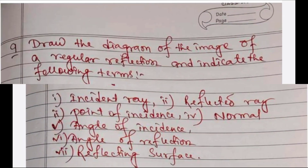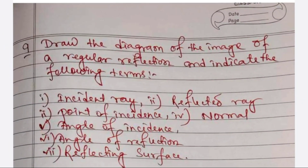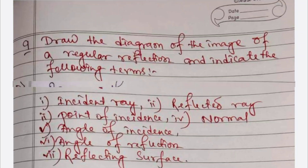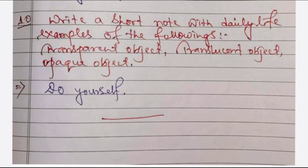Draw a diagram of regular reflection and indicate the following terms: incident ray, reflected ray, point of incidence, normal, angle of incidence, angle of reflection, and reflecting surface. You have to do this by yourself at home — it was already shown in the previous video. The last question asks you to write a short note with daily life examples on transparent, translucent, and opaque objects. This is a very easy task and has already been discussed earlier. Today up to here, students. Thank you. Visit again, and all the best for your coming periodic test 2 or post-mid exam.